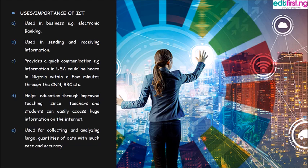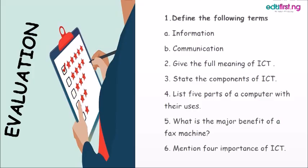In summary, ICT means information communication technology, and its components include the computer, telephone, fax machine, and the internet. A computer is defined as an electronic device used in processing, storing, and retrieving information, and it is made up of two devices: input devices and output devices. For your evaluation, please answer the questions below. Thank you, have a nice day.